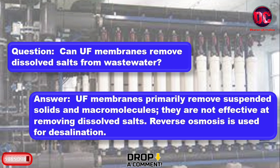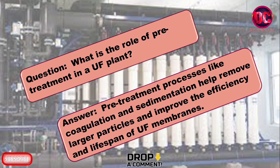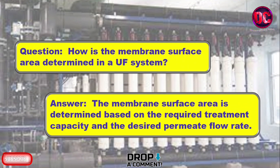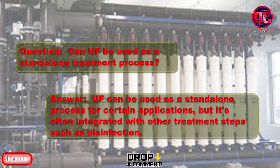Reverse osmosis is used for desalination. What is the role of pretreatment in a UF plant? Pre-treatment processes like coagulation and sedimentation help remove larger particles and improve the efficiency and lifespan of UF membranes. How is the membrane surface area determined in a UF system? The membrane surface area is determined based on the required treatment capacity and the desired permeate flow rate. Can UF be used as a standalone treatment process? UF can be used as a standalone process for certain applications, but it's often integrated with other treatment steps such as disinfection.